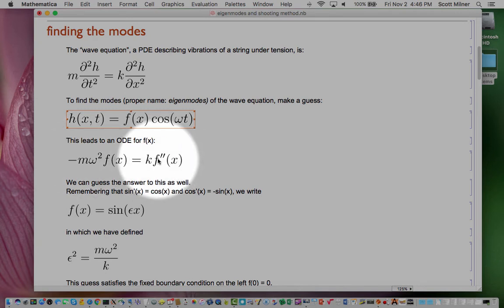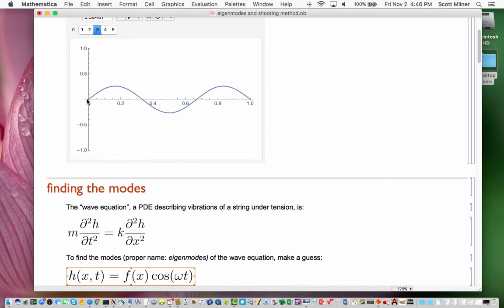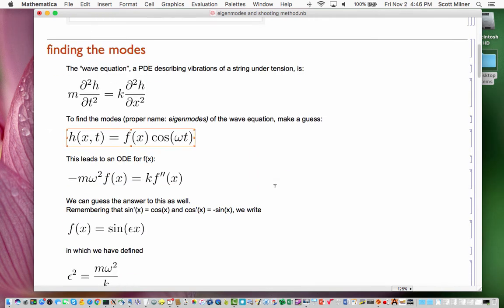The boundary conditions for this ODE are that the displacement h is zero at the ends of the string. Remember, it's fixed here and fixed there, can't go up and down. And so the boundary condition on f is that it should be zero on one end and on the other end.